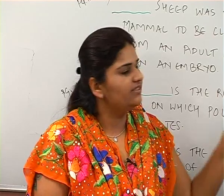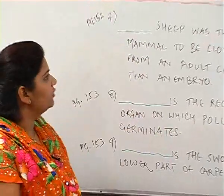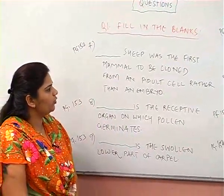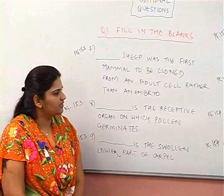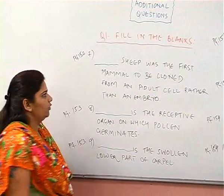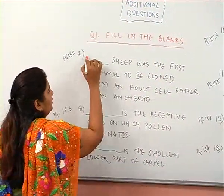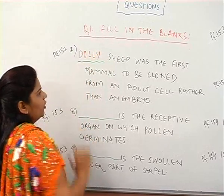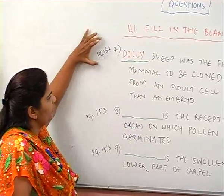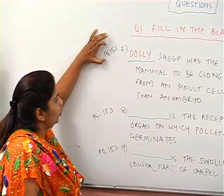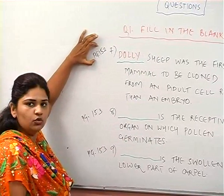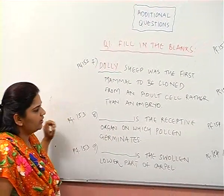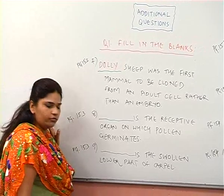The seventh question: Dolly sheep was the first mammal to be cloned from an adult cell rather than an embryo. The answer is Dolly. This is from page 152. The eighth question from page 153: stigma is the receptive organ on which pollen germinates.